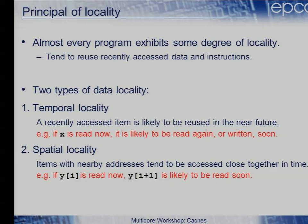Programs exhibit some degree of locality — you reuse data, and you also reuse instructions. Scientific codes especially spin around in loops a lot. The two types of data locality are temporal locality and spatial locality. Temporal locality: a recently accessed item is likely to be reused in the near future. Spatial locality: because we deal with arrays, if we've read Y[i], we'll likely read Y[i+1] in the near future.